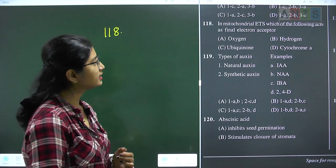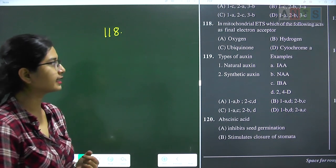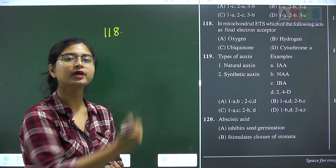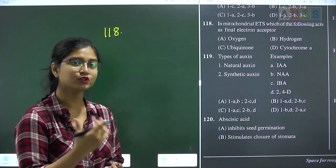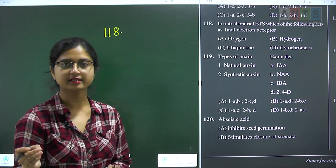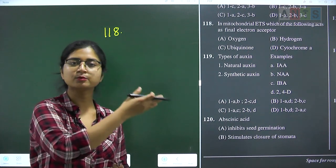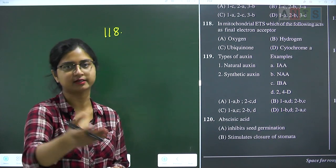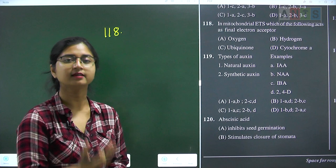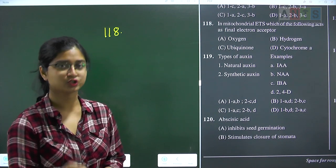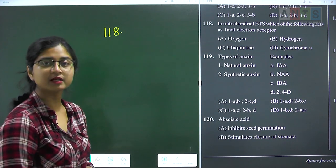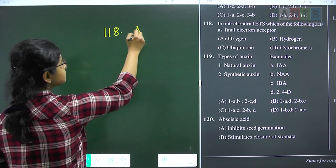Question 118: in mitochondrial ETS, which acts as the final electron acceptor? In aerobic respiration, electrons move from one carrier complex to the next on the inner mitochondrial membrane. The terminal or final electron acceptor is oxygen — this is exactly where oxygen is utilized in aerobic respiration. Question 118 answer is option A.